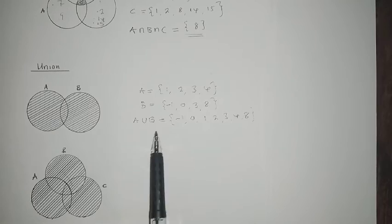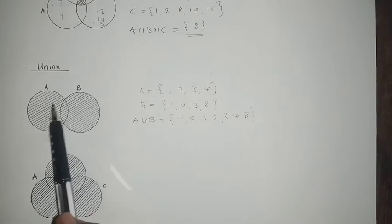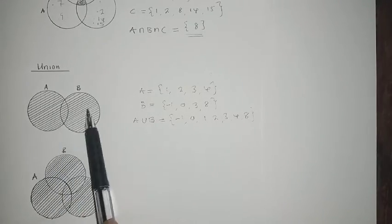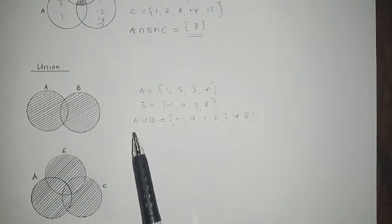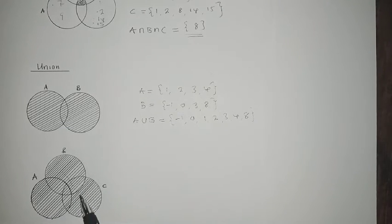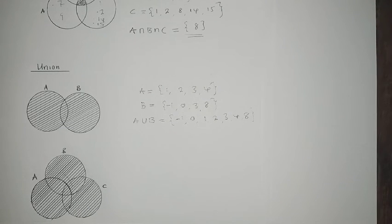For union with three circles, everything is shaded — all the mentioned sets are included. That's how union works with three sets as well.